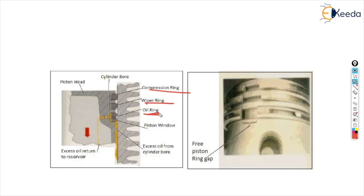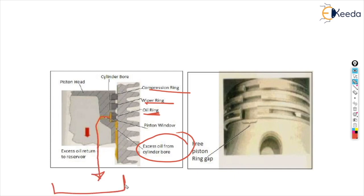As you can see, whatever excess oil there is gets moved through the oil ring and is returned to the reservoir at the end of the piston. So this is the function of the rings — compression ring, wiper ring, and oil ring.